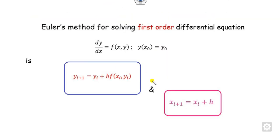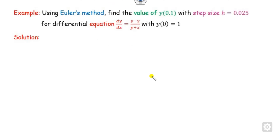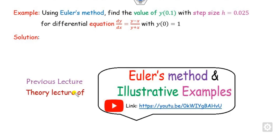The Euler method update equation is: y(i+1) = y(i) + h * f(x_i, y_i), where h is the step size and f(x_i, y_i) is the function value. After finding the values of y_i, you can update the values of x_i accordingly. We can try to solve one example, following the same techniques as shown in our previous lecture on solving Euler's method numerically.